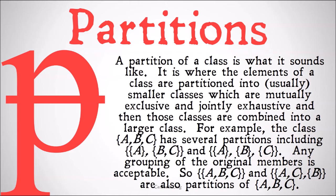For example, the class ABC has several partitions, including the class of the class of A and the class of BC, and the class of the class of A, the class of B, and the class of C. Any grouping of the original members is acceptable. So the class of the class of A, B, and C, and the class of the class of AC and the class of B are also partitions of ABC. Basically, we're taking the members and splitting them up.